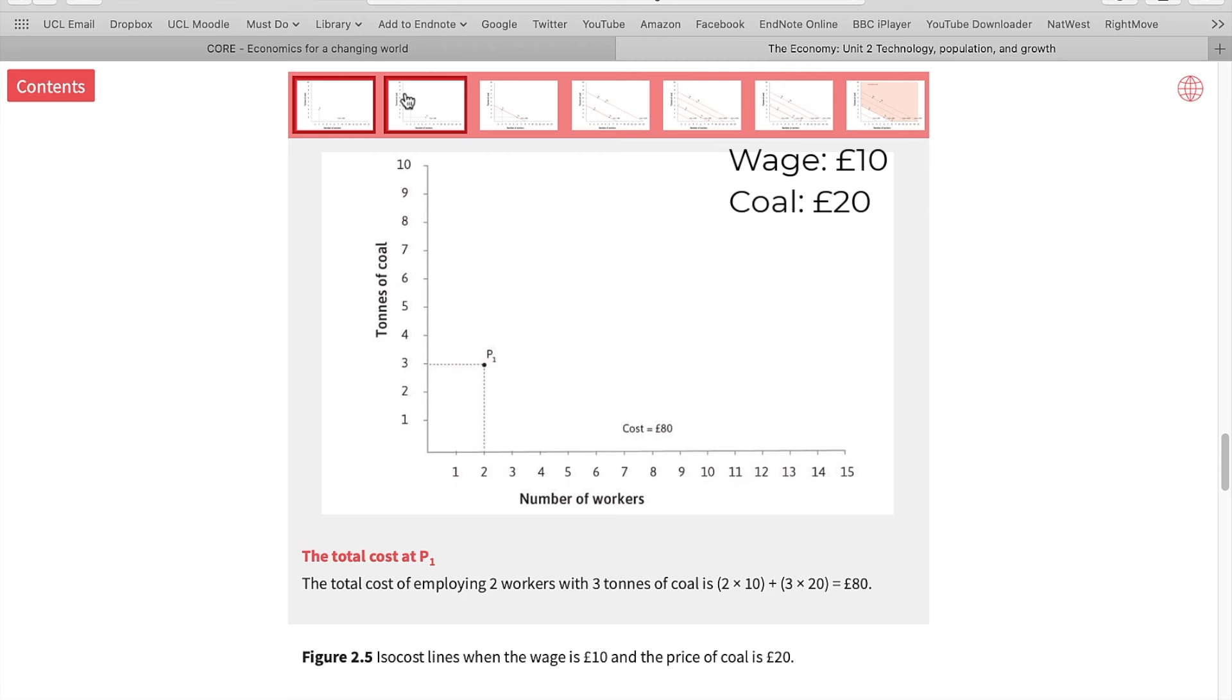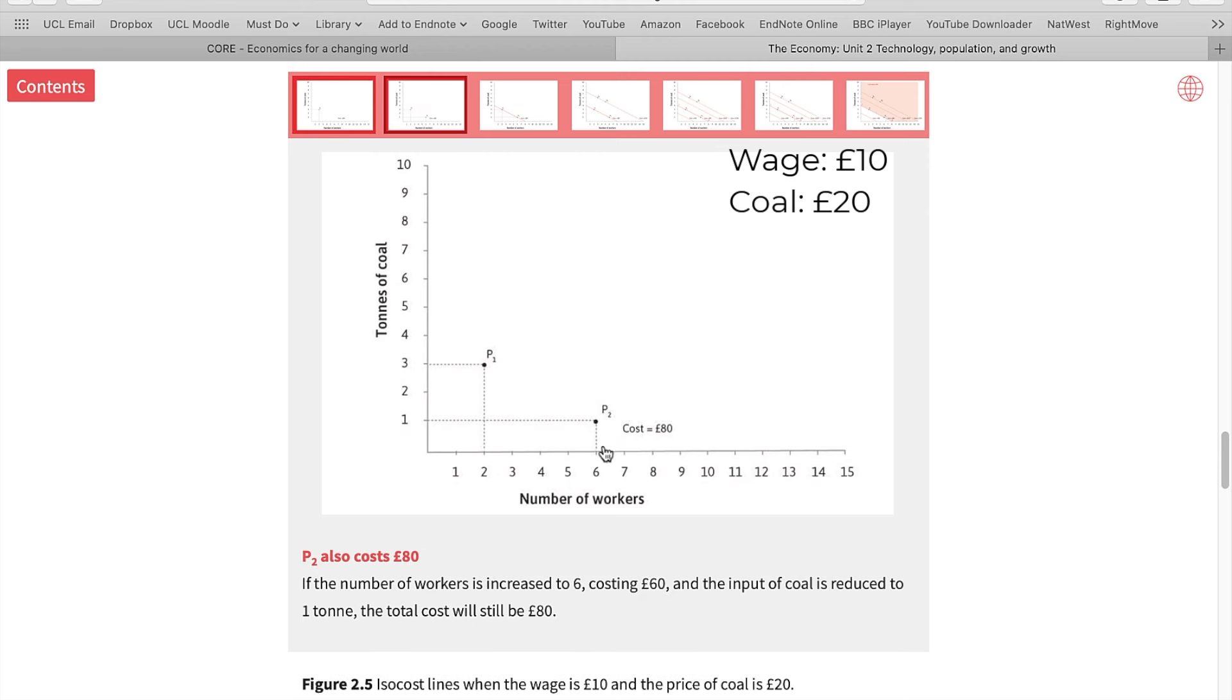So, let's assume there's another available technology for our firm, P2, and this is a relatively labor intensive technology because you're going to need six workers and only one ton of coal to produce 100 meters of cloth. Now, let's work out the cost of this technology. You're going to be needing six workers, so that is six multiplied by 10 pounds per hour, and you're going to need only one ton of coal. That's one multiplied by 20 pounds, and then you still get 80 pounds, the total cost of this technology.